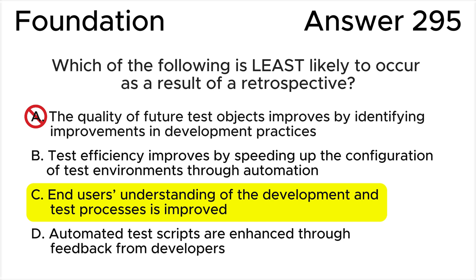All the other answers are incorrect. Answer A is incorrect because one of the purposes of retrospectives is to identify potential process improvements, which if put into practice should result in the quality of future test objects being higher — so this is likely to occur as a result of a retrospective.